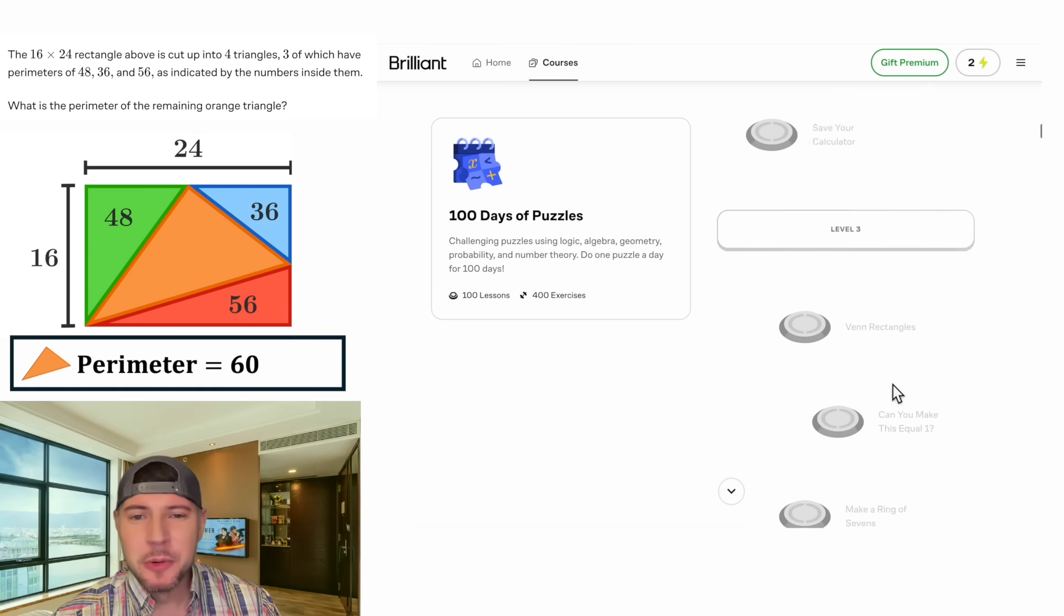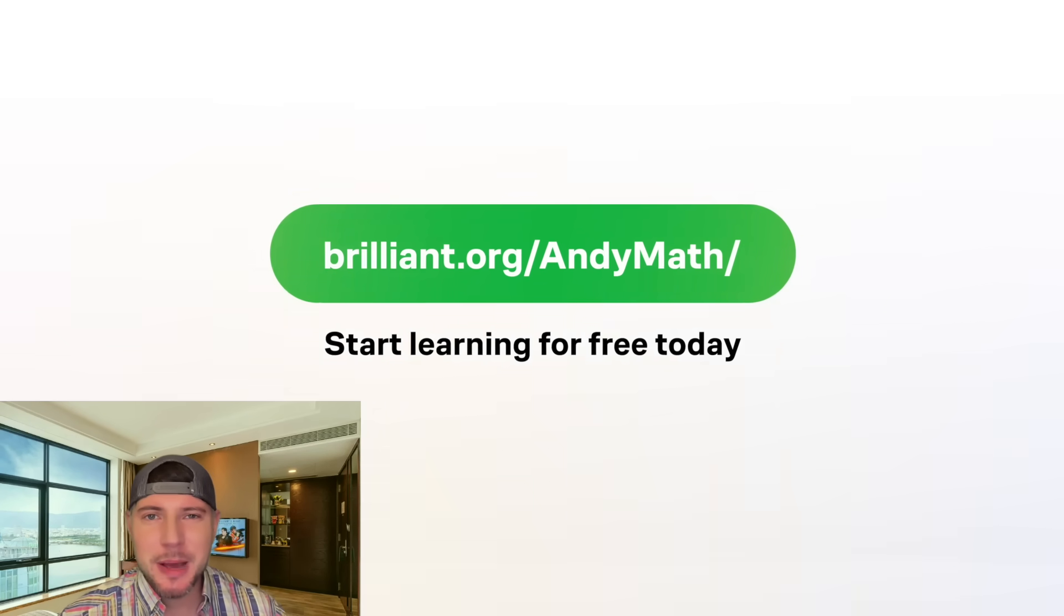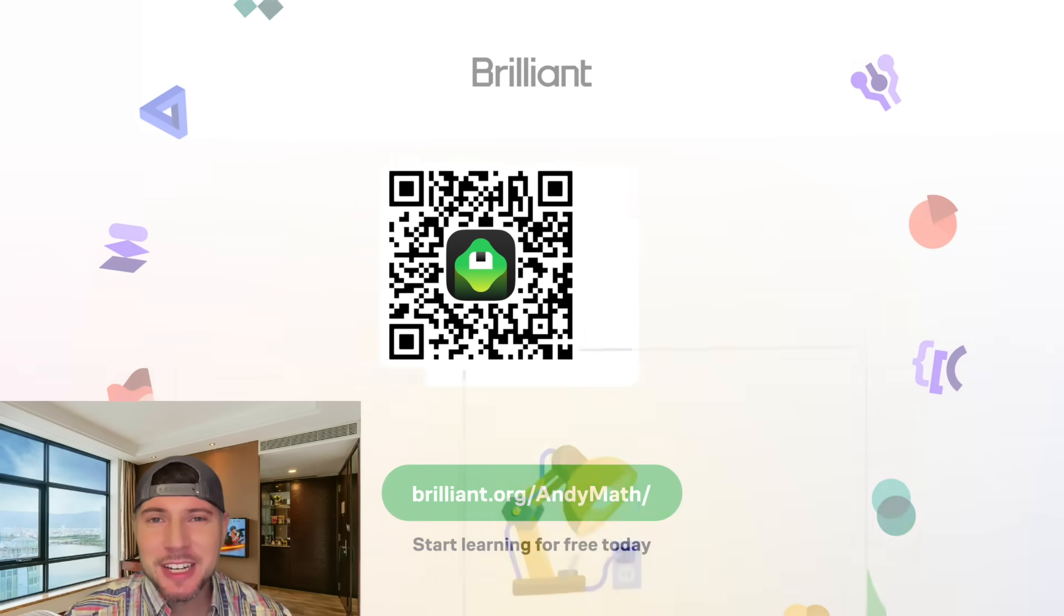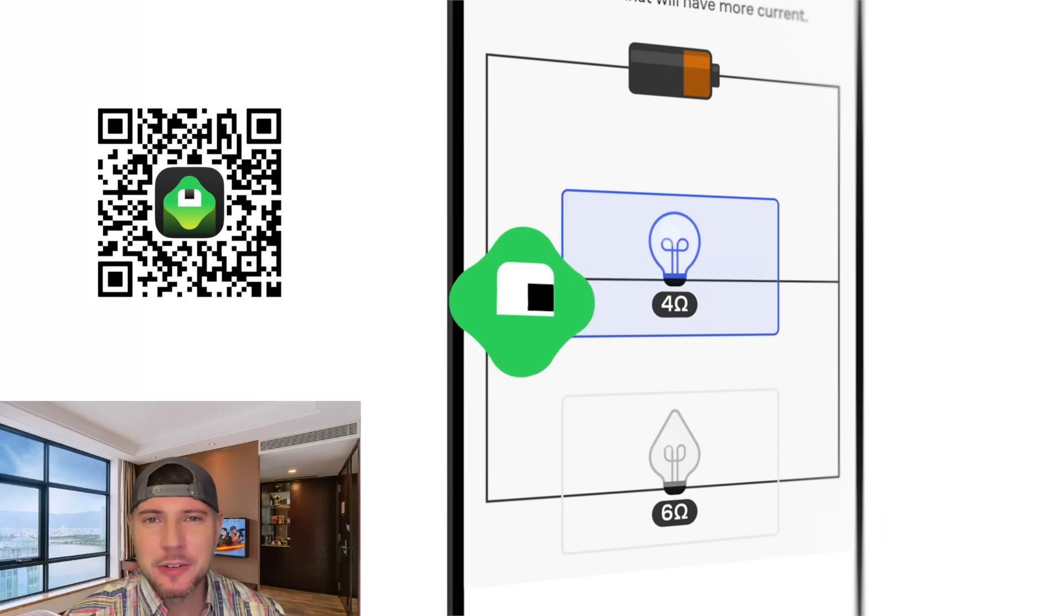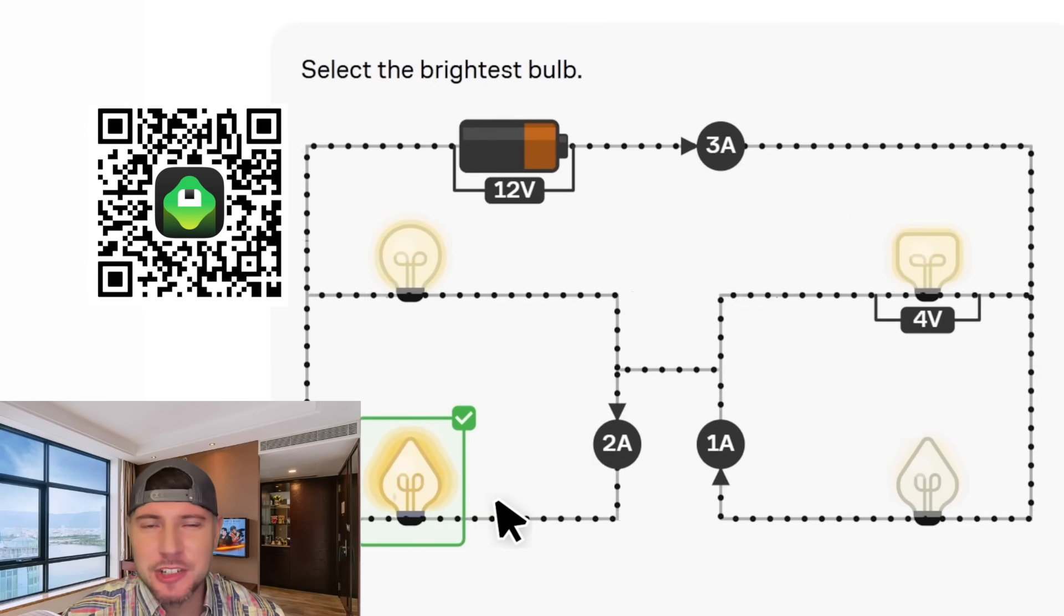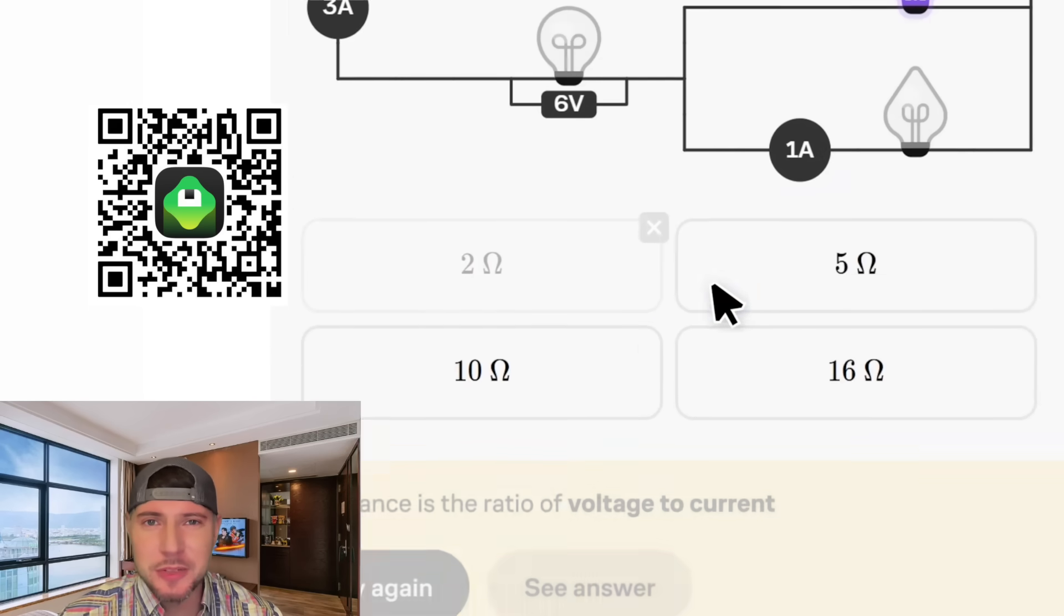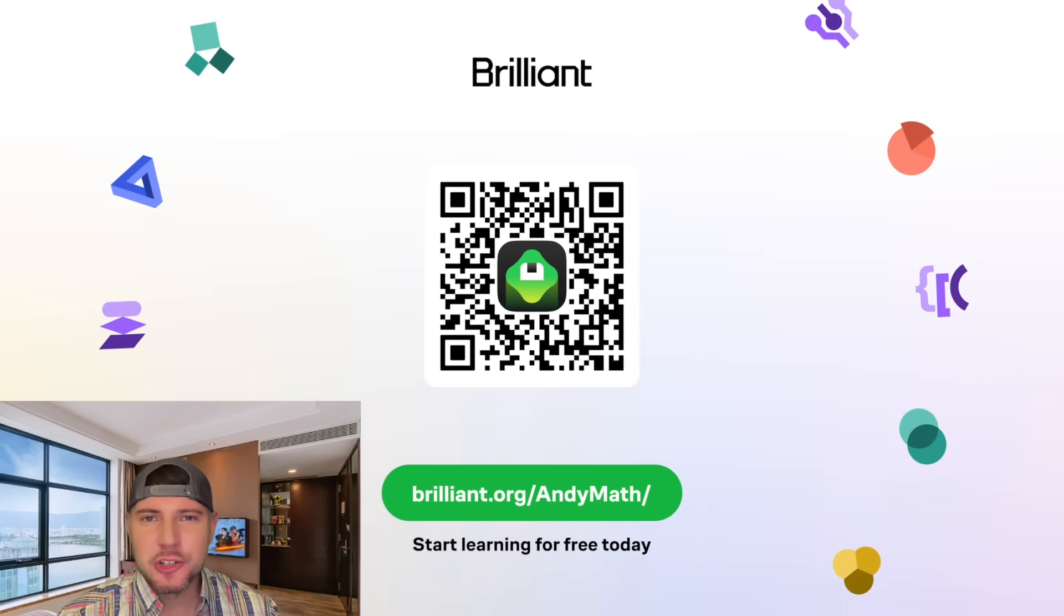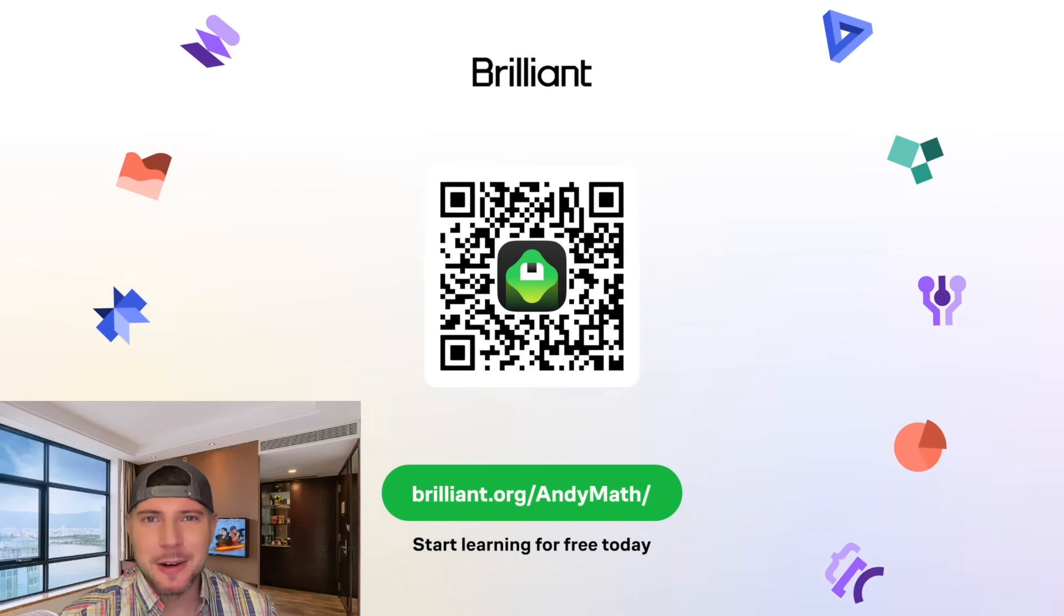If you want to try these out, it's called 100 Days of Puzzles. Just visit brilliant.org slash AndyMath or scan the QR code on the screen. You can also click on the link in the description. Brilliant has thousands of lessons in math, data analysis, programming, and AI. And all of them are interactive, which is the most effective way to learn. They have geometry, algebra, calculus, linear algebra, probability, all the fun math classes. They also have tons of science courses, programming, artificial intelligence, data analysis, and much more. If you click on the link, you can try Brilliant for free or you can also get 20% off an annual premium subscription. How exciting.